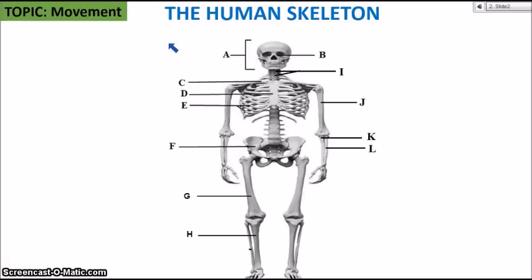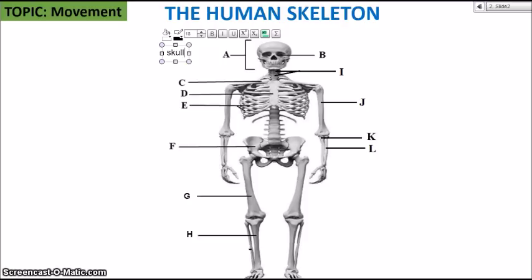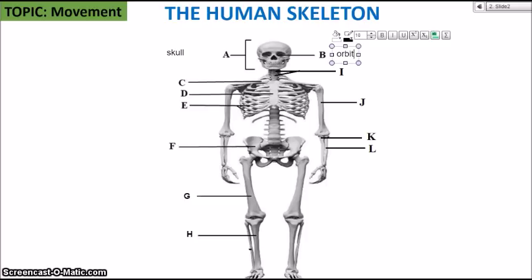We're going to start off with the topic of movement, looking at some of the key bones that make up the human skeleton. A is pointing at the skull, which consists of the cranium and the orbits. B is the orbits where the eyes would be, commonly known as the eye sockets. The cranium is at the top part of the skull, responsible for protecting the brain. And then we have the mandibles, where the jaws would be — the jawbone.